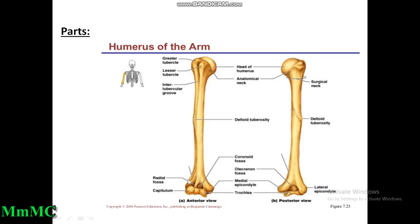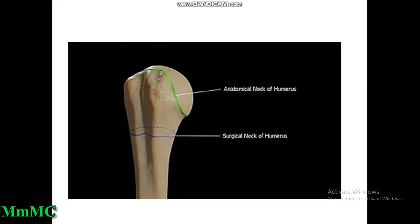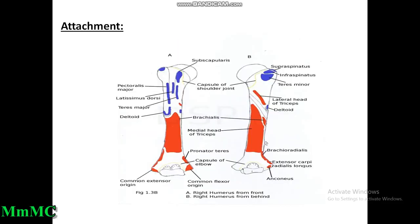The lower end presents several features: the lateral epicondyle, the prominent medial epicondyle, radial fossa, coronoid fossa, capitulum, and trochlea. The upper end of the humerus presents the greater tubercle, lesser tubercle, and intertubercular sulcus.